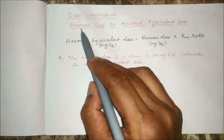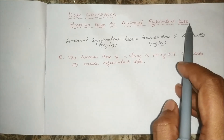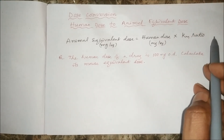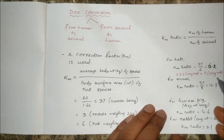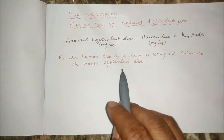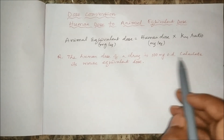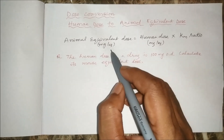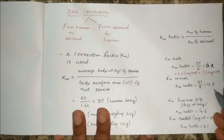Usually during experimentation with rats we take the average body weight as 150 grams, so KM is 6 and KM ratio will be 6.2. For mouse with average weight 20 grams, KM ratio will be 37 divided by 3, that is 12.3. For guinea pig of average weight 400 grams, KM ratio is 4.6, and for rabbit of average weight 1.8 kg, KM ratio is 3.1. If we know the human dose and want to convert it to animal equivalent dose, the formula is: animal equivalent dose equals human dose multiplied by KM ratio.